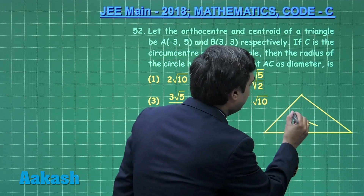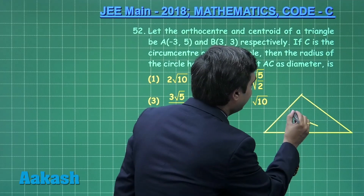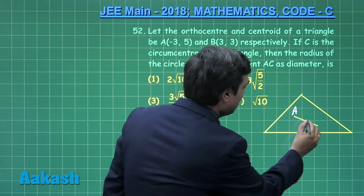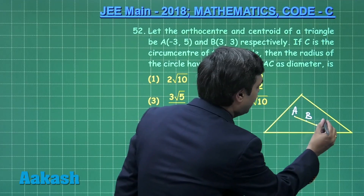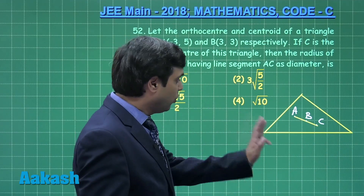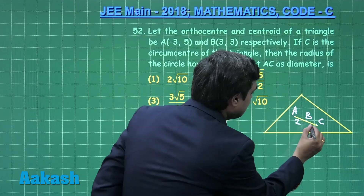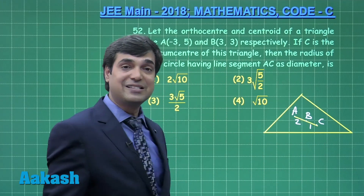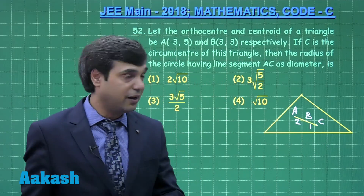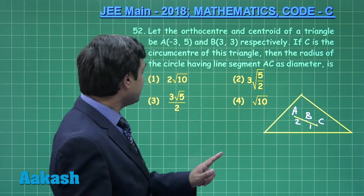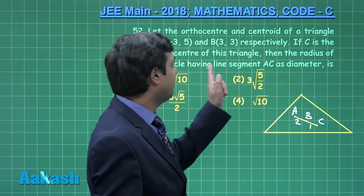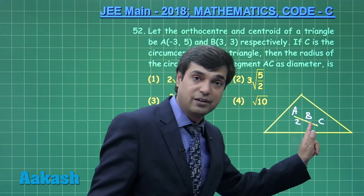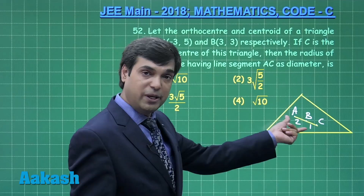We know that this one is the orthocentre A, this one is the centroid, and this one is the circumcenter. The centroid divides the line segment joining the orthocentre and circumcenter in the ratio 2:1. The question asks to find the radius of the circle with diameter AC, so first let us find AB.